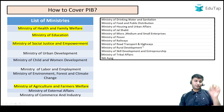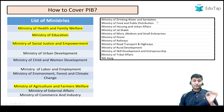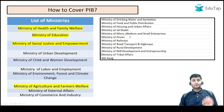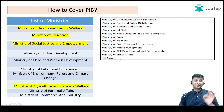Apart from those, additional important ministries are: Ministry of Drinking Water and Sanitation, Food and Public Distribution, Housing and Urban Affairs, MSME (Micro Medium and Small Enterprises), Power, Railways, Road Transport and Highways, Rural Development, Skill Development and Entrepreneurship, Tribal Affairs, and NITI Aayog. All these ministries are important.